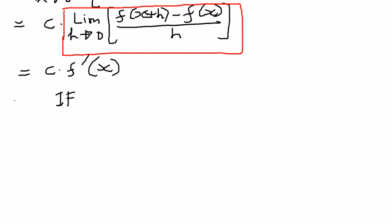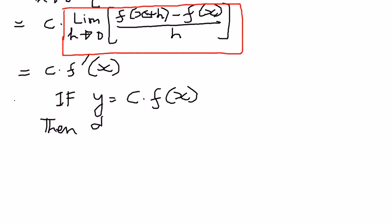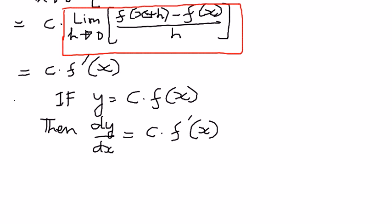If y is equal to a constant times a function, then dy by dx is going to be equal to c times the first derivative of that function. The derivative of a constant times a function is the constant times the derivative of the function — that is another way we can say it in words. So this is our proof.